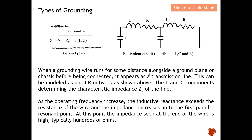When a ground wire runs for some distance along a ground plane or chassis before being connected, it appears as a transmission line. Typically in DC, a cable has equal voltage and current throughout its length. However, when frequency increases, this becomes untrue. A wire at high frequency can be defined by an equivalent circuit and modeled as an LCR network as shown. At high frequency, we can no longer treat this as a simple DC cable.